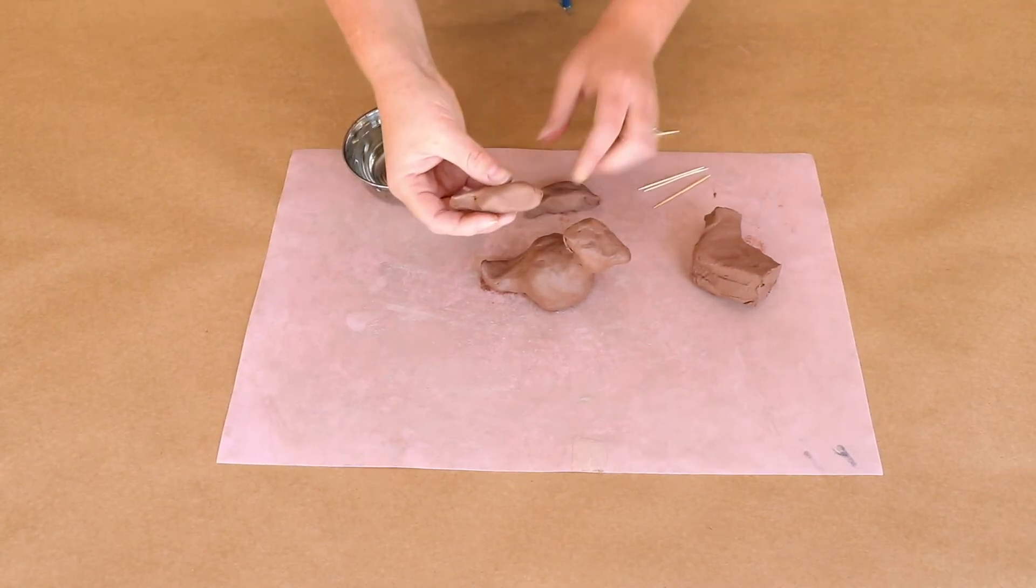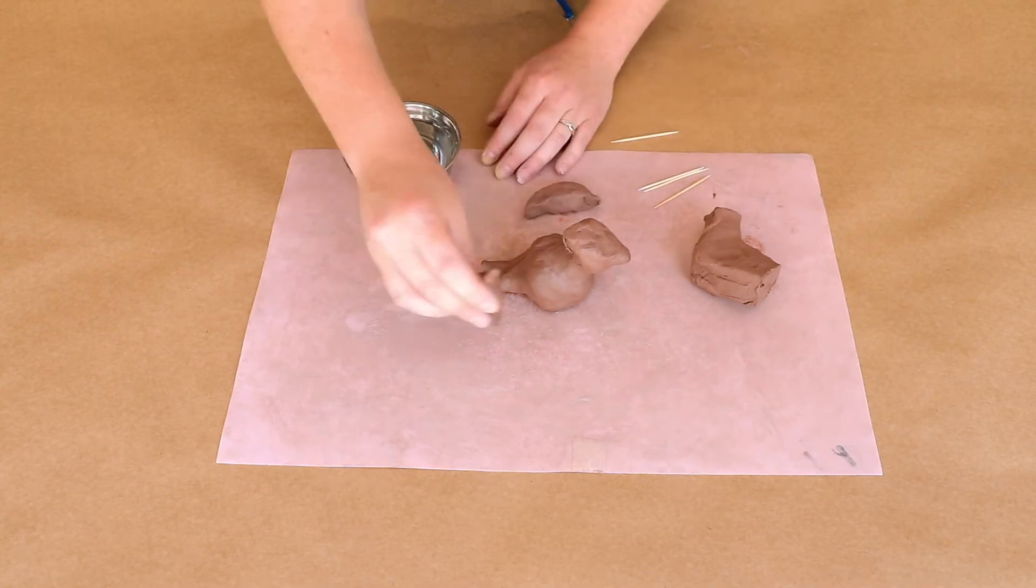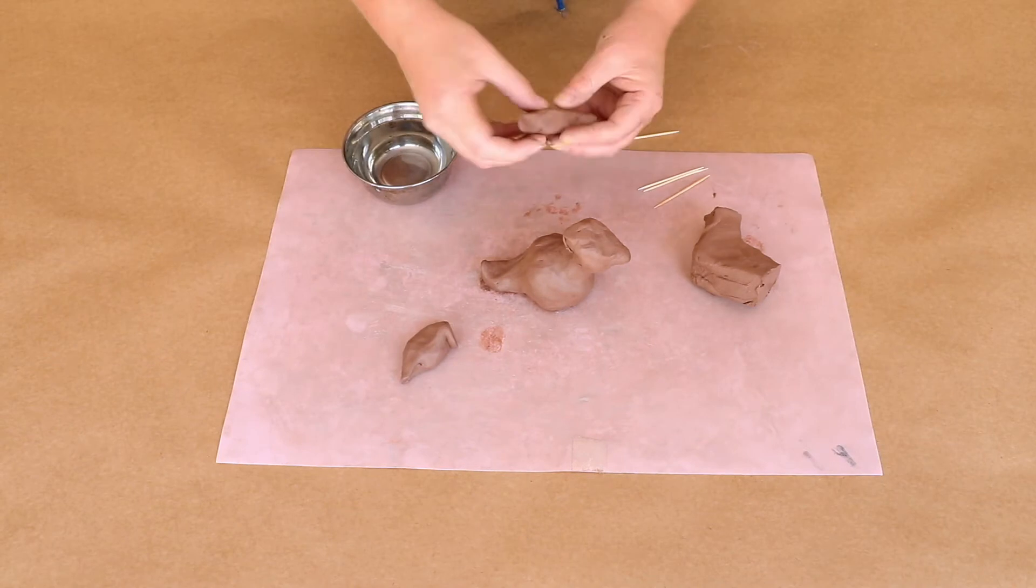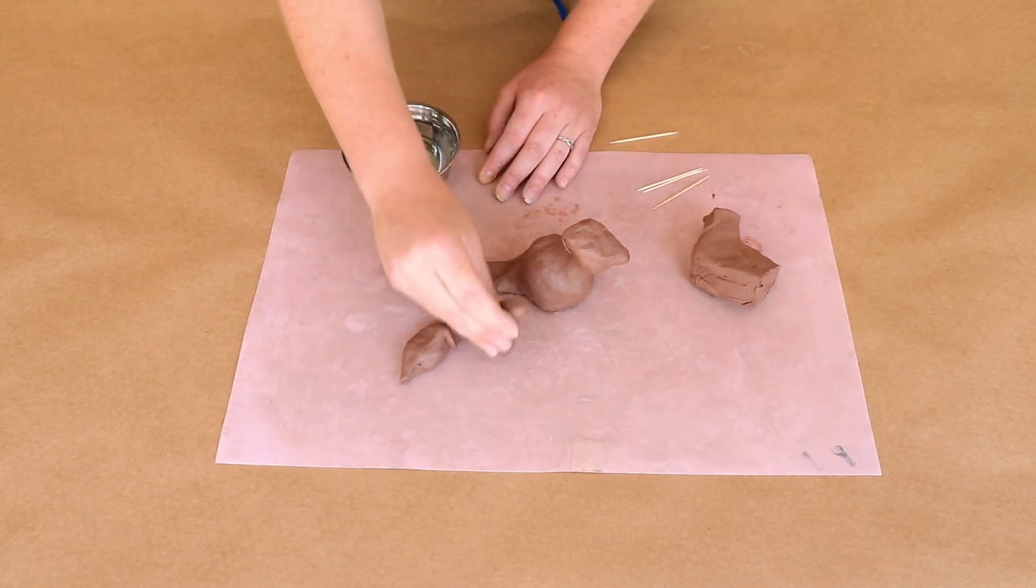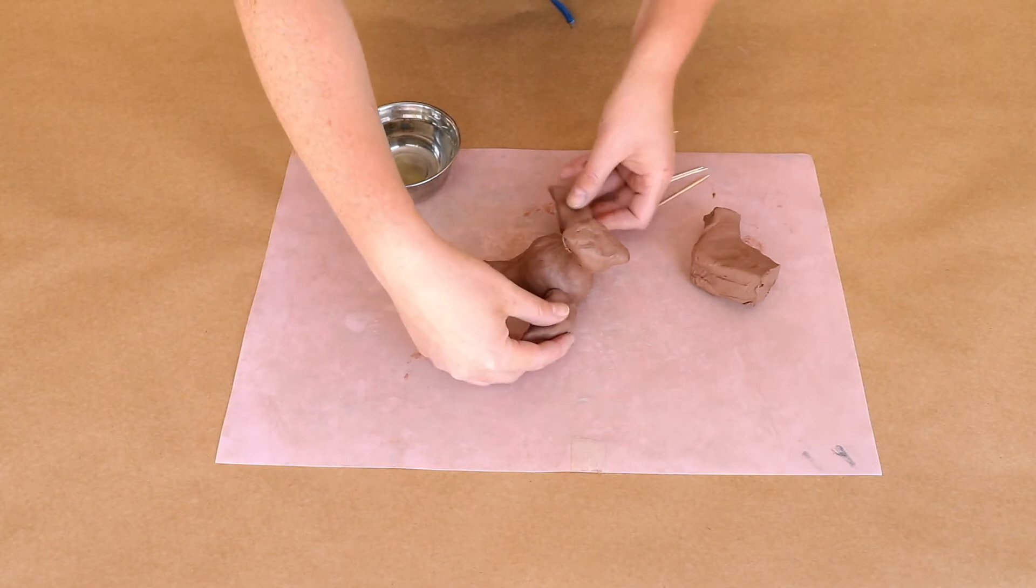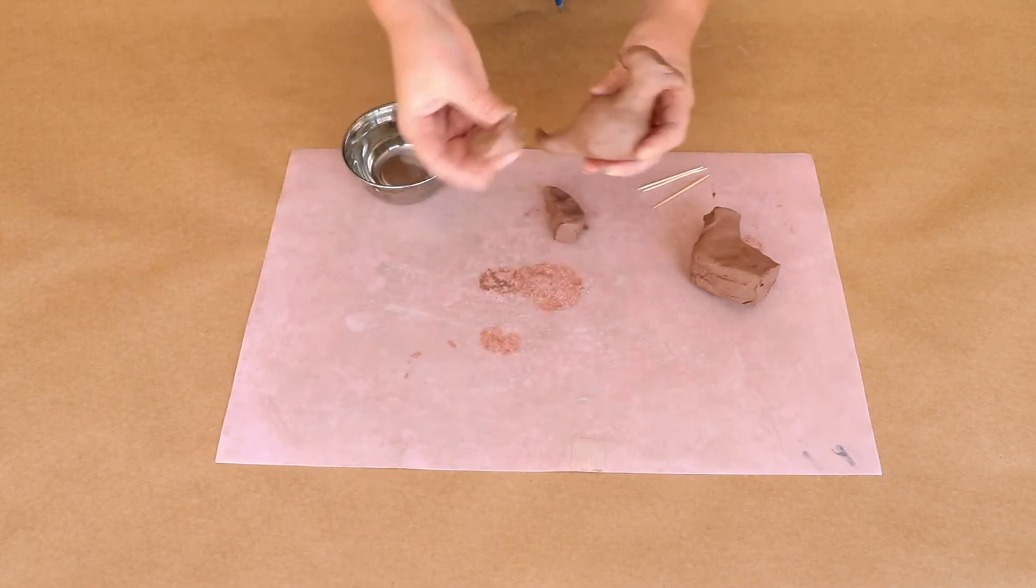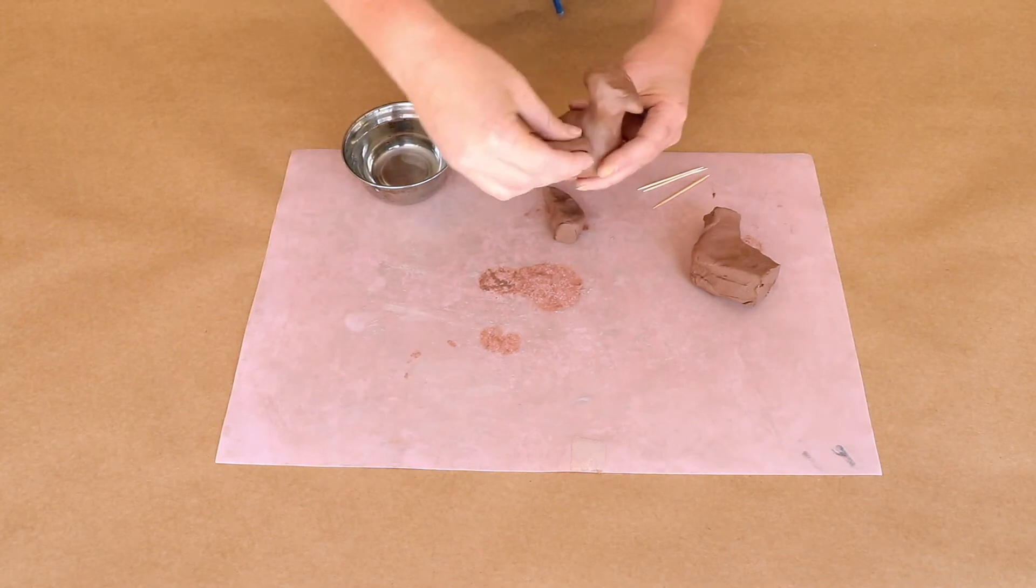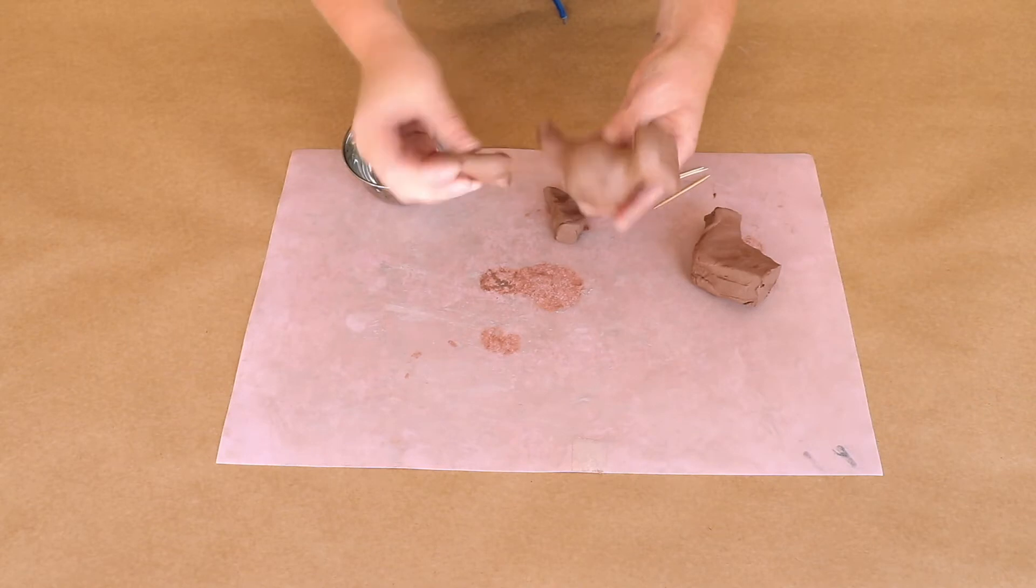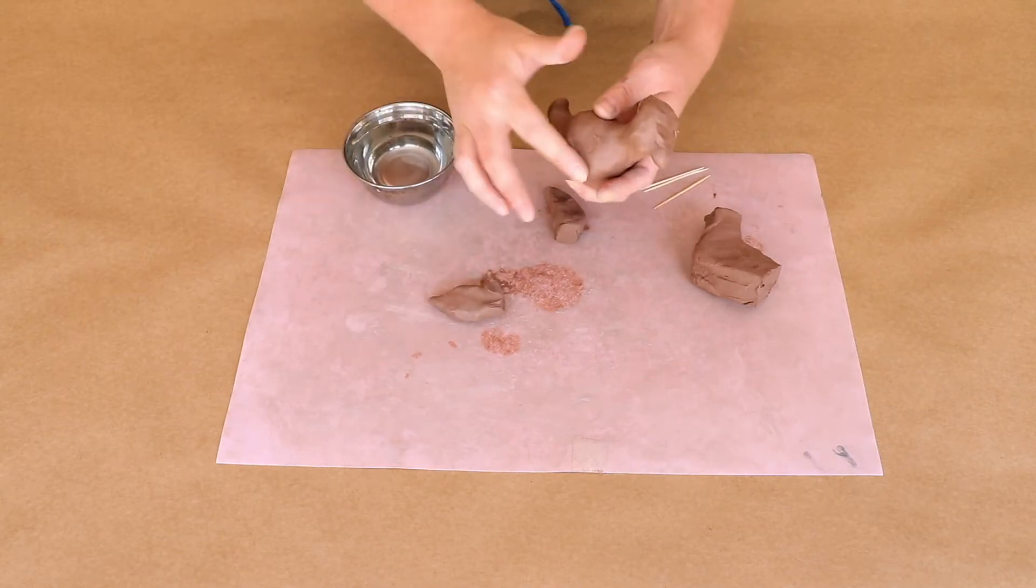What I'm going to do is I'm going to hit this end against the table to create a flat area, and do the same with this one. So now it's easier to attach them to the sides. With clay, you can't attach something to another piece, it'll just fall off. So we need to use a certain type of glue.